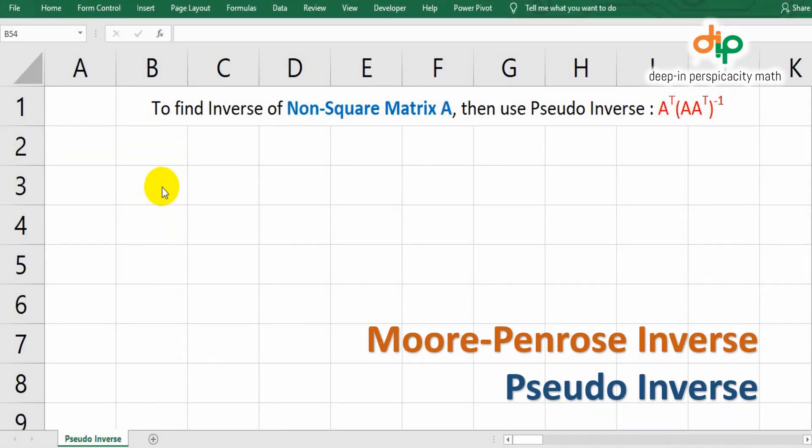Second example, we are going to find the inverse of non-square matrix using Moore-Penrose method. In this example, we are going to find the inverse of matrix 2 by 4, 2 rows and 4 columns. Then the order of matrix inverse should be 4 by 2, 4 rows and 2 columns.